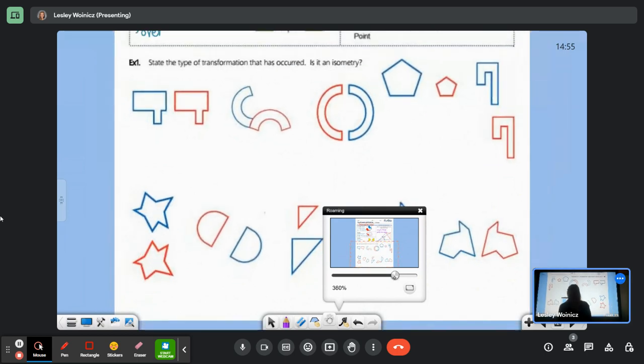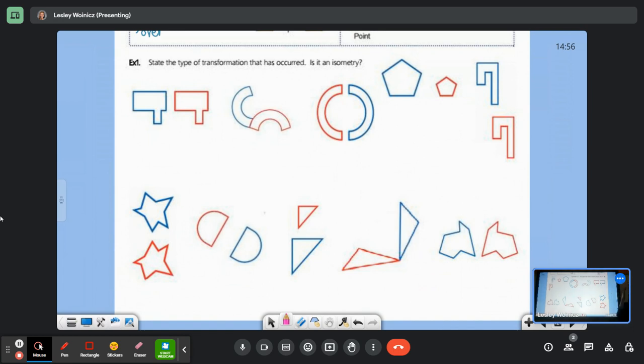Looking at the examples that you have up at the top, we are going to state the type of each transformation that has occurred and then say whether or not it is an isometry. So it'll either be a yes or a no. What happened here? This is a translation. Translation is something that we're going to use in geometry. Is it an isometry? If I traced this and scooted it over, would it overlap exactly? Yes. So it's a yes isometry.